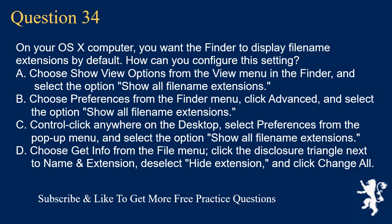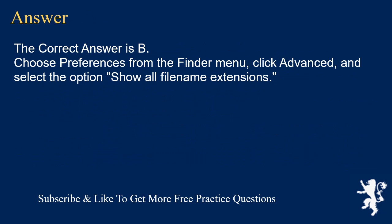Question 34. On your OSX computer, you want the Finder to display filename extensions by default. How can you configure this setting? A. Choose Show View Options from the View menu in the Finder, and select the option Show All Filename Extensions. B. Choose Preferences from the Finder menu, click Advanced, and select the option Show All Filename Extensions. C. Control-click anywhere on the desktop, select Preferences from the pop-up menu, and select the option Show All Filename Extensions. D. Choose Get Info from the File menu, click the disclosure triangle next to Name and Extension, select Hide Extension, and click Change All. The correct answer is B: Choose Preferences from the Finder menu, click Advanced, and select the option Show All Filename Extensions.